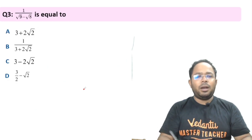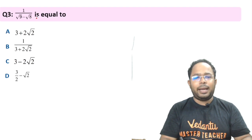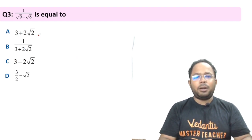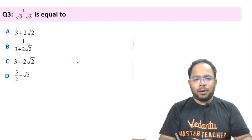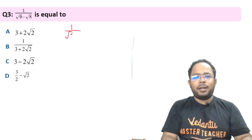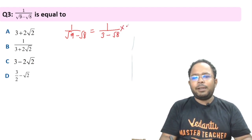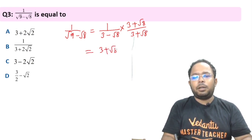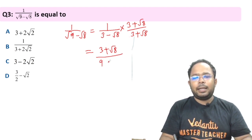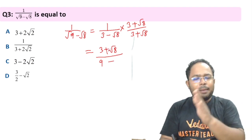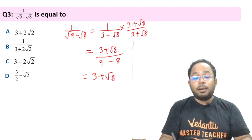Next question: 1/(√9 − √8) equals what? We know √9 = 3, so this is 1/(3 − √8). We rationalize by multiplying with (3 + √8)/(3 + √8). Using a²−b², the denominator becomes 9 − 8 = 1. So we get 3 + √8. But this is not our final answer.